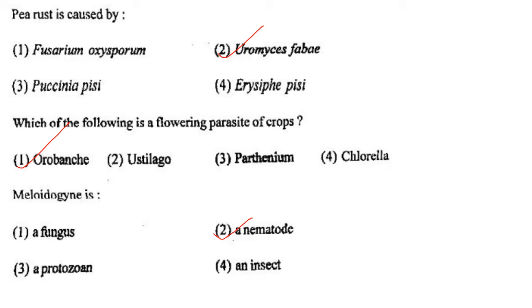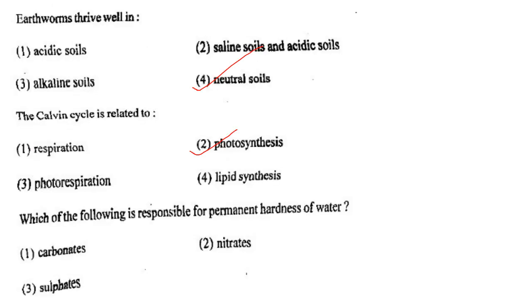Next one: Meloidogyne is option 1, a fungus; option 2, a nematode; option 3, a protozoan; option 4, an insect. Answer is option 2: a nematode.